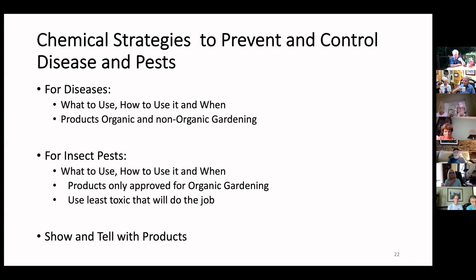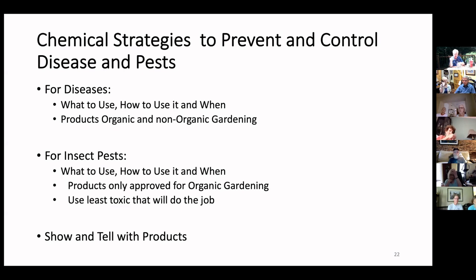For sucking insects like squash bugs, harlequin bugs, or stink bugs, the BT and spinosad don't work. You're going to have to use pyrethrins, insecticidal soap, or horticultural oil. You have to be careful because those are general insecticides that will also kill beneficial insects, so you need to be targeted. You have to spray under the leaves too, since eggs and nymphs are often underneath — go out and spray carefully by hand, but they are effective when you do that.